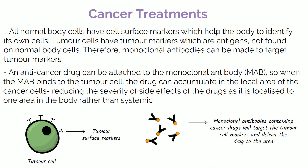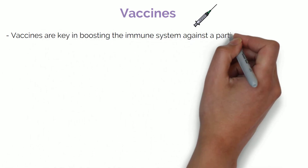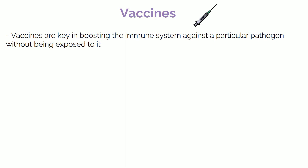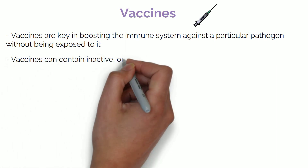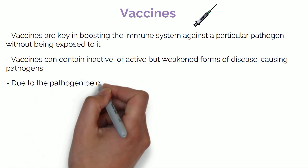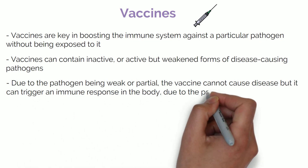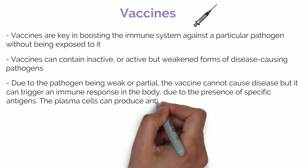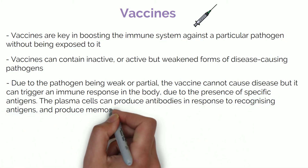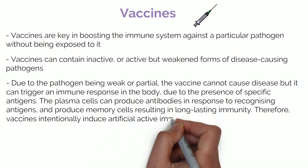We will discuss using knowledge of antigens and immunity to protect us against disease in order to produce vaccines. Vaccines are valuable in providing protection against an array of diseases, boosting the immune system against a particular pathogen without being exposed to the dangerous pathogen itself. Vaccines contain inactive or live weakened forms of disease-causing pathogens. Because the pathogen is weak or partial, the vaccine cannot cause disease, but it can trigger an immune response due to the presence of specific antigens. The plasma cells can produce antibodies in response to recognising antigens and produce memory cells, resulting in long-lasting immunity. Therefore, vaccines intentionally induce artificial active immunity.